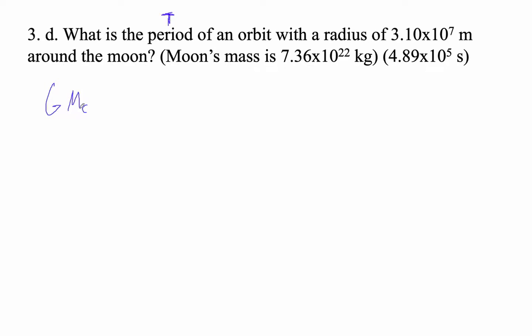So G, the central body is the moon in this case. Mass of the satellite over r squared is mass of the satellite times 4 pi squared r over t squared.